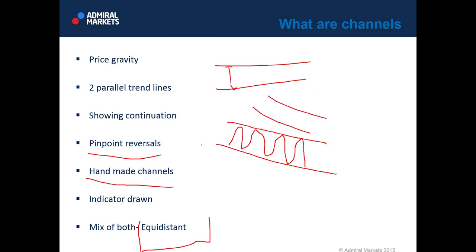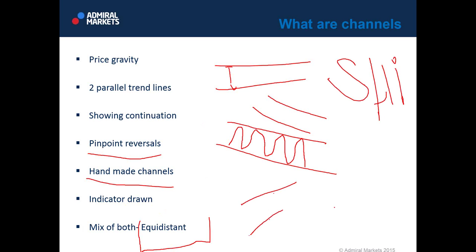Every MT4 platform has the equidistant channel integrated by default. It is a mix of handmade channel and indicator-drawn channel. Handmade channels are drawn by our own hands, using our eyes to pinpoint tops and bottoms, peaks and valleys. For indicator-drawn channels, indicators usually mark the highs or lows and then draw a trend line. One good indicator-drawn channel is called SHI — it's an automatic channel draw tool you can find on the internet.